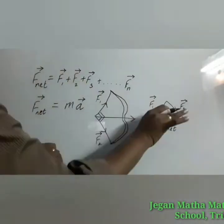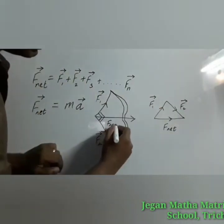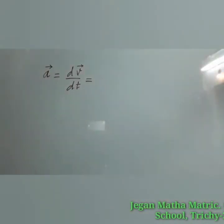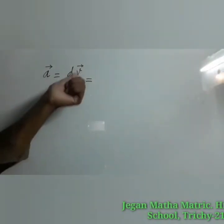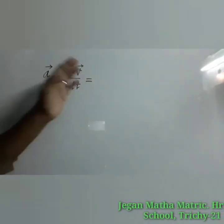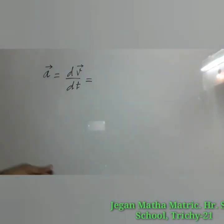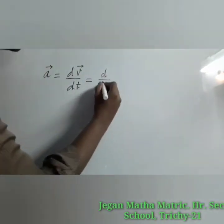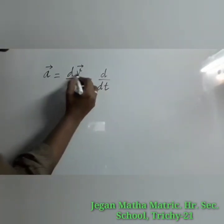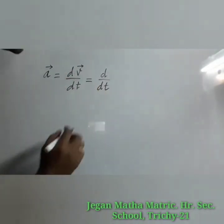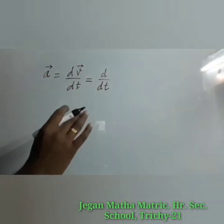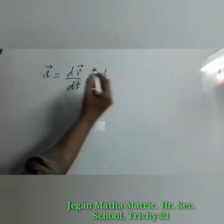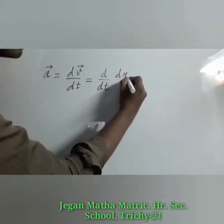We know that acceleration is the rate of change of velocity with respect to time, written as dv/dt. Instead of v, velocity is the rate of change of displacement with respect to time, so instead of the velocity vector I can write dr/dt.